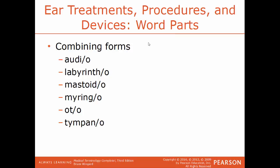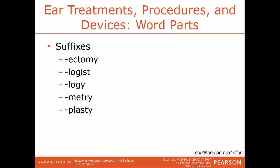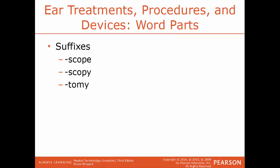Now we'll talk about some ear treatments, procedures, and devices and the word parts. Combining forms: audi/o — hearing; labyrinth/o — the chambers of the middle and inner ears, the labyrinths; mastoid/o — the mastoid process; myring/o — the eardrum or tympanic membrane; ot/o — the ear; tympan/o — the tympanic membrane or eardrum. Common suffixes: -ectomy — surgical removal; -logist — a specialist; -logy — the study of; -metry — the process of measuring; -plasty — surgical repair; -scope — an instrument used for viewing; -scopy — a process of viewing; -tomy — a process of cutting.